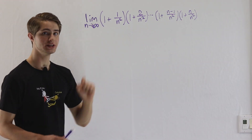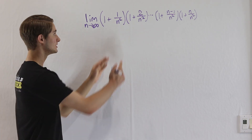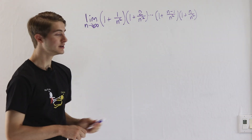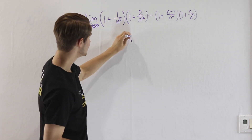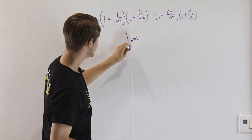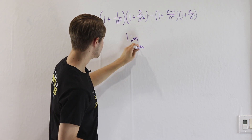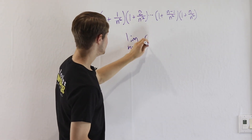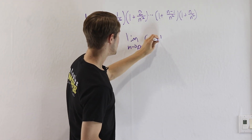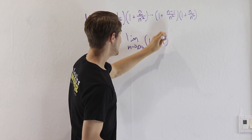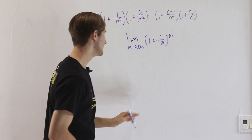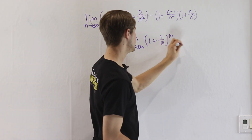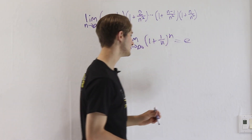The first thing I notice about this limit is that it's an infinite product and it looks very similar to another limit that we know: the limit as n approaches infinity of 1 plus 1 over n to the n. We know this limit is equal to e by definition.